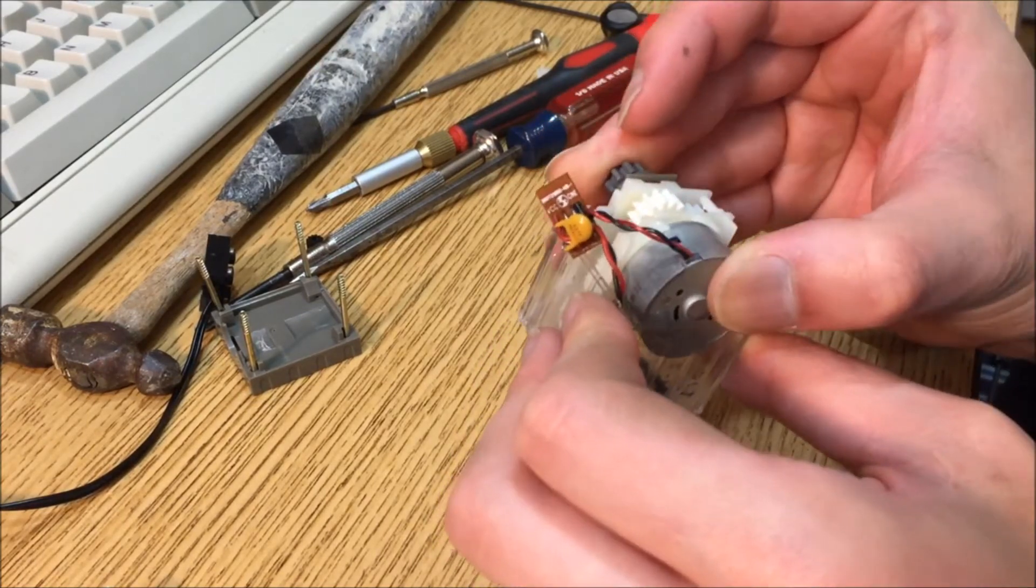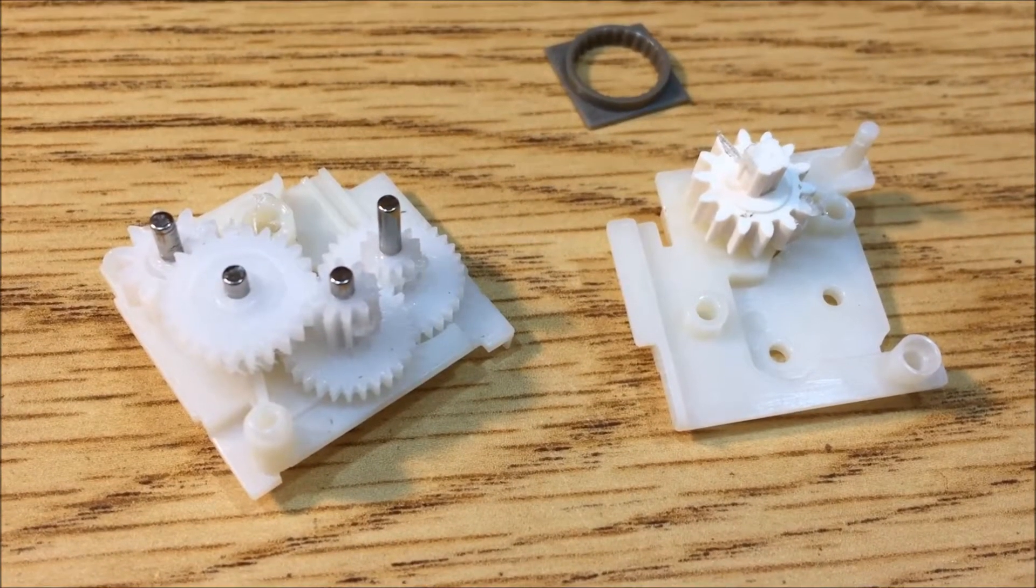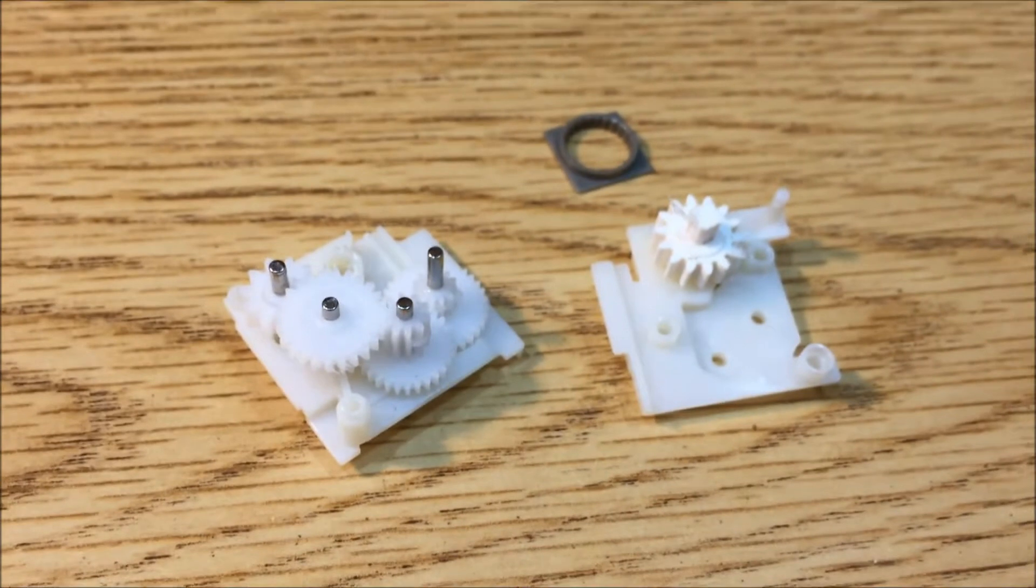When putting it back together, I once again lubricated everything a little, and here you can see all the plastic reduction gears in the gearbox.